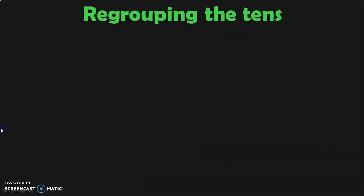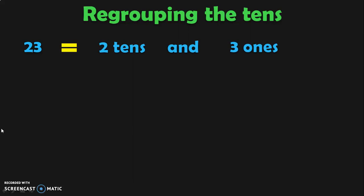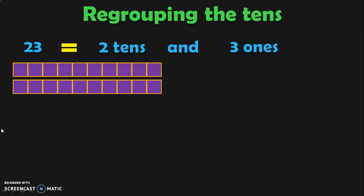First, we are going to see regrouping the tens. Take the example of 23. 23 can be written as two tens and three ones. Now we are going to regroup the tens. Let us represent this in the form of blocks. Two tens can be represented like this and three ones can be represented like this.